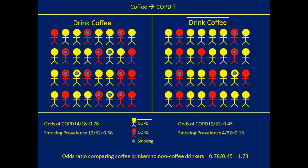It looks like we probably have confounding here. Smoking is indicated by a blue dot among individuals; those without blue dots are non-smokers. Among the coffee drinkers, a higher percentage are smokers than among the non-coffee drinkers. This is the effect of the tendency to use stimulants — we expected coffee drinking and smoking to be associated, and we see that here.